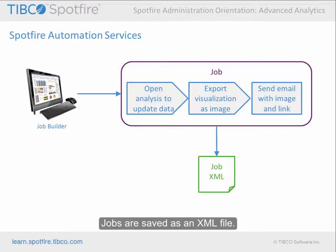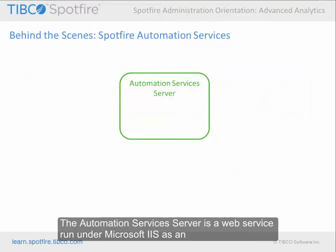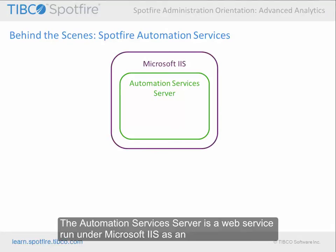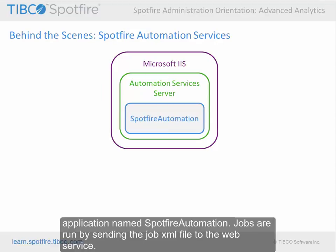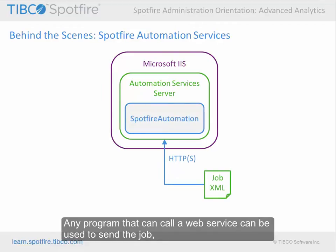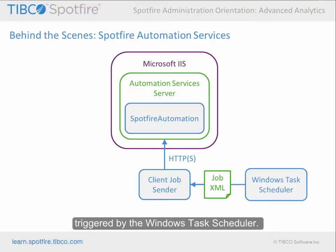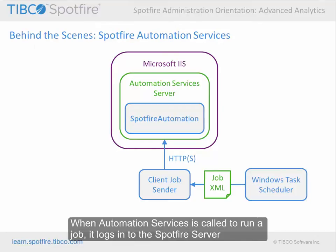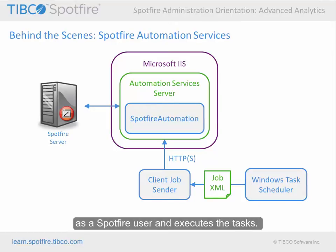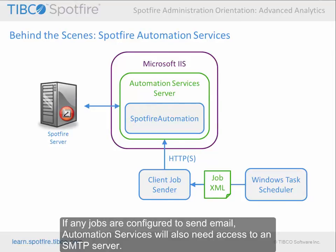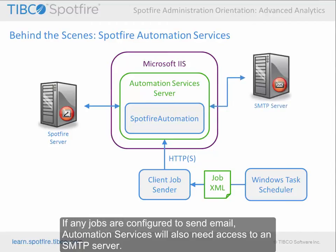Jobs are saved as an XML file. The Automation Services server is a web service run under Microsoft IIS as an application named Spotfire Automation. Jobs are run by sending the job XML file to the web service. Any program that can call a web service can be used to send the job, paired with any program that can be configured to trigger the call. The most common configuration is to use the Client Job Sender tool provided by Spotfire, triggered by the Windows Task Scheduler. When Automation Services is called to run a job, it logs in to the Spotfire server as a Spotfire user and executes the tasks. If any jobs are configured to send email, Automation Services will also need access to an SMTP server.